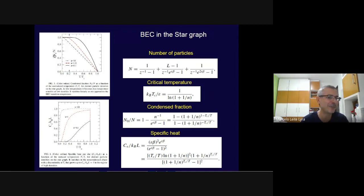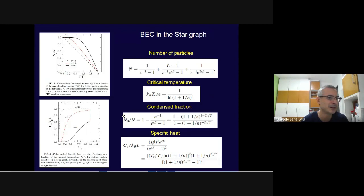The fraction of particles condensed in the ground state, scaled by the critical temperature, gives a very simple curve. The specific heat of this Bose gas can also be written analytically: it goes to zero at T=0 as required, grows until a finite value at the critical temperature, and is exactly zero above the critical temperature.